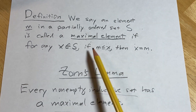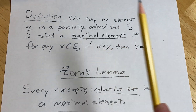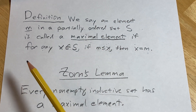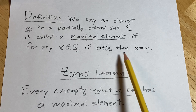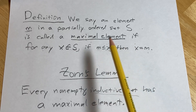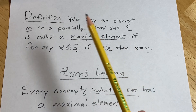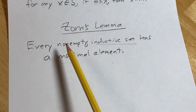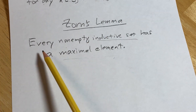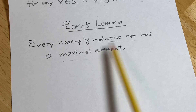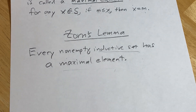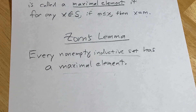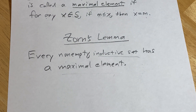That's called maximality of m. And when you study ideals, there are a lot of things that are very similar to this very same thing. Zorn's Lemma: every non-empty inductive set has a maximal element. So there it is. Take care.